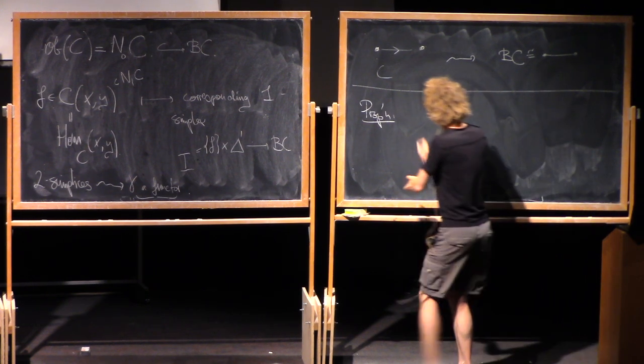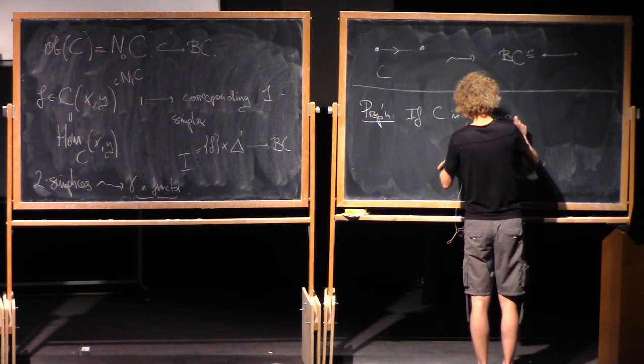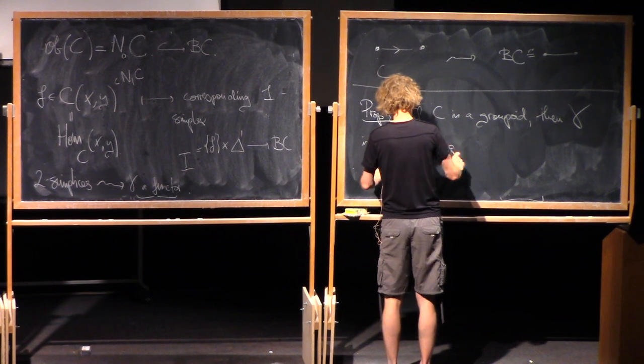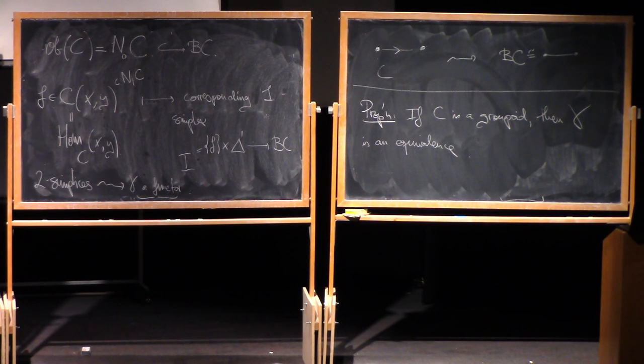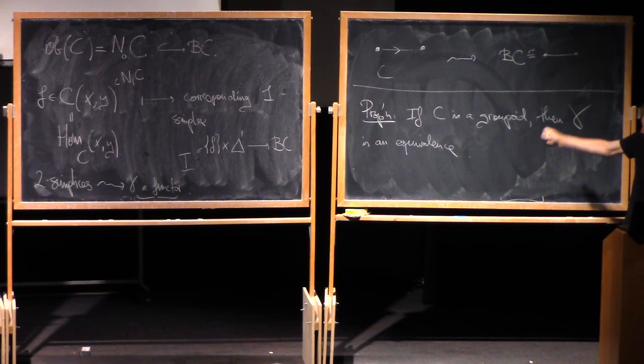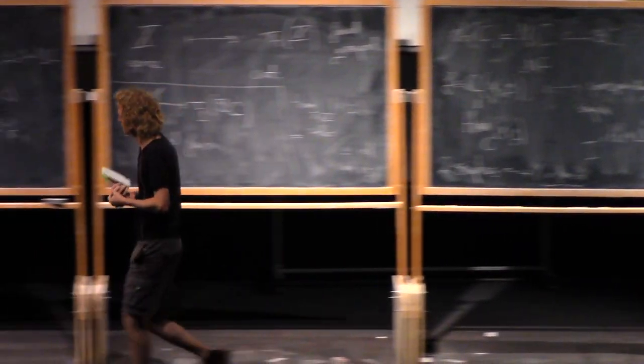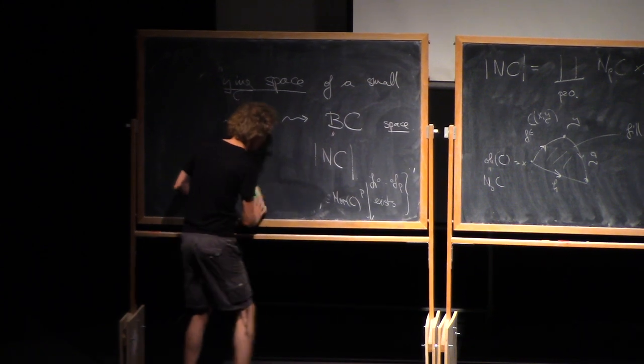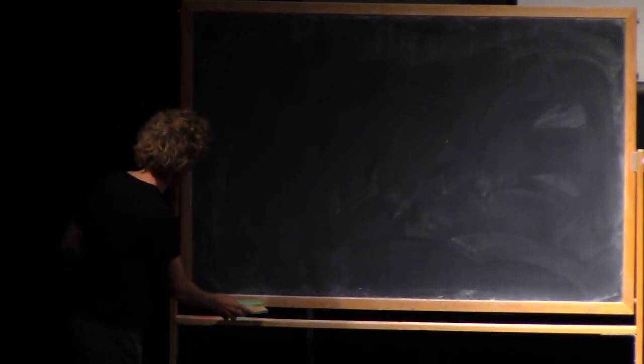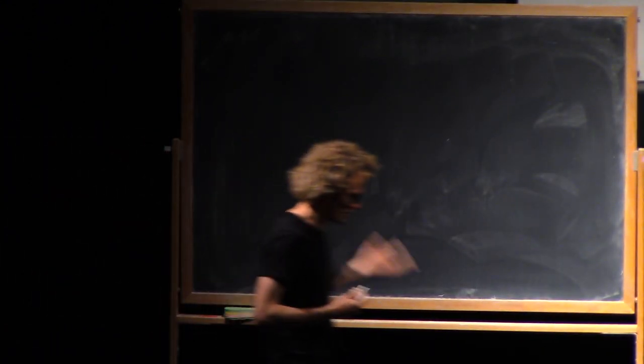I will not prove it, but it's kind of a standard proof. If C is a groupoid, then γ is an equivalence of categories. So no information is lost in that case. By going from C to BC, you can get C back up to equivalence by taking fundamental groupoid. I'm sure many of you have seen that, especially in the case if the category has only one object. Then being a groupoid is the same as being a group. Then BC is the usual construction of Eilenberg-MacLane spaces, K(π,1). And this just becomes a statement that you can get the group back by taking π₁ of them.